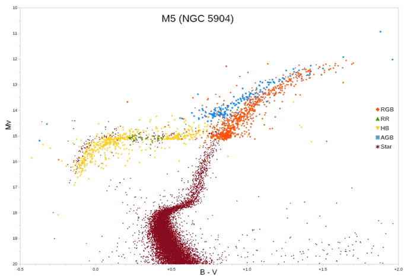Theories to explain these stars include binary interactions, and 'late thermal pulses' where a thermal pulse that asymptotic giant branch stars experience regularly occurs after fusion has ceased and the star has entered the superwind phase. These stars are 'born again' with unusual properties.